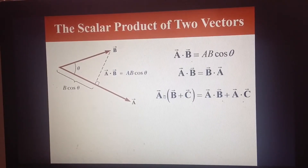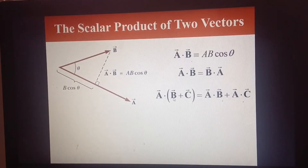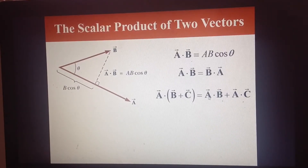Also, if you have three vectors a, b, and c, you can take the dot product of a with the sum of two vectors b and c. This is just the same as the dot product of a and b plus the dot product of a and c.